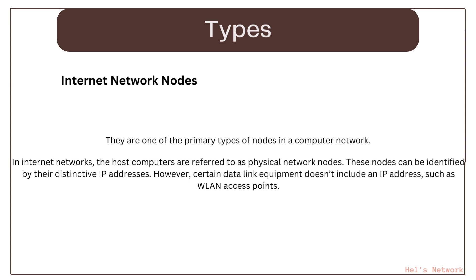In internet networks, the host computers are referred to as physical network nodes. These nodes can be identified by their distinctive IP addresses. However, certain data link equipment doesn't include an IP address, such as WLAN access points.